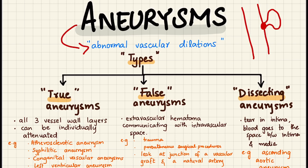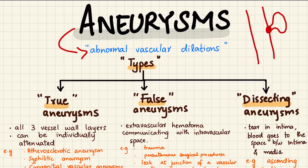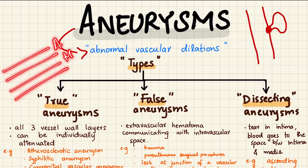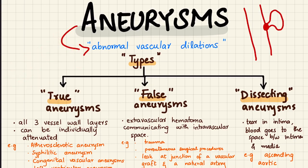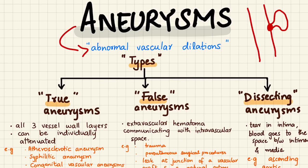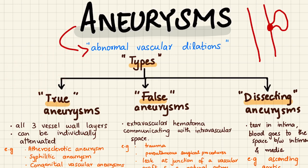The second type of true aneurysm is the syphilitic aneurysm, which chiefly occurs in tertiary syphilis. The spirochete Treponema pallidum travels to large arteries — particularly the aorta — and attacks the vasa vasorum in the adventitia, causing inflammation there. This inflammatory process causes the formation of obliterative endarteritis, meaning the vasa vasorum end arteries are obliterated by the spirochete-induced inflammation.